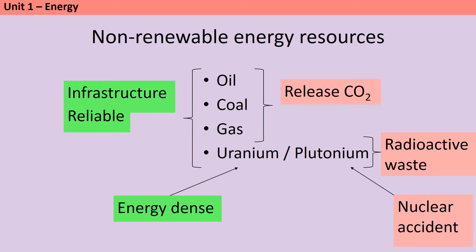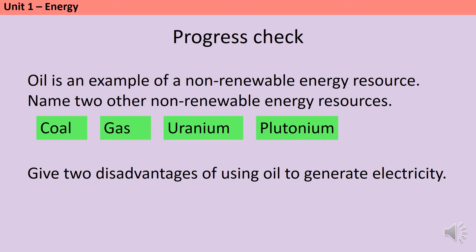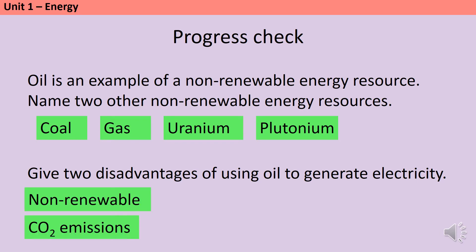There's also a risk of a nuclear accident. For the progress check: oil is non-renewable, so two other non-renewable resources are coal and gas (the other fossil fuels) or nuclear power — uranium or plutonium. Two disadvantages of using oil are that it's a non-renewable fuel and that it produces CO2 emissions.